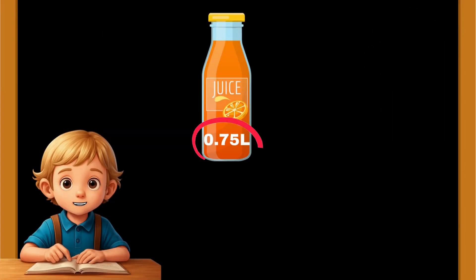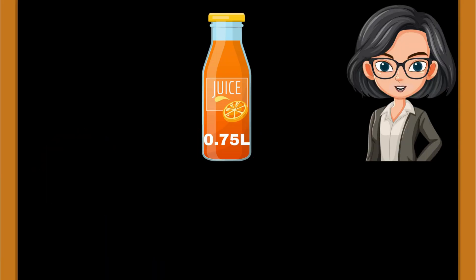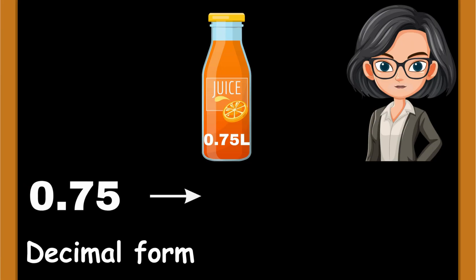But what about numbers like 0.75? That's not a fraction. It actually is. 0.75 is the decimal form of three-quarters. Decimals are just another way to show parts of a whole.